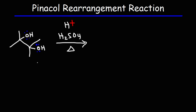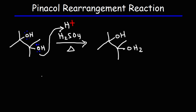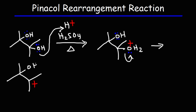Let's start with the first one. The first step is protonation — we're going to convert the OH group from being a poor leaving group to a better leaving group. Now water is going to leave, and we're going to get a tertiary carbocation. In most other organic reactions, when you have a tertiary carbocation, you typically don't have any other rearrangements, because tertiary carbocations tend to be quite stable relative to primary and secondary carbocations.